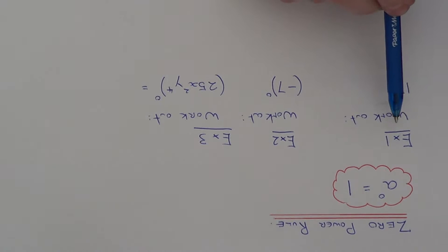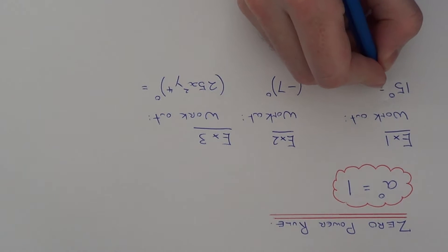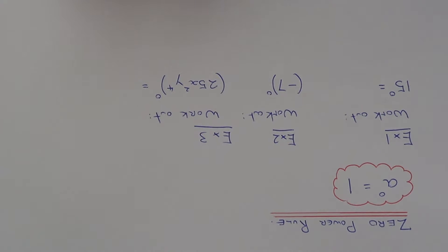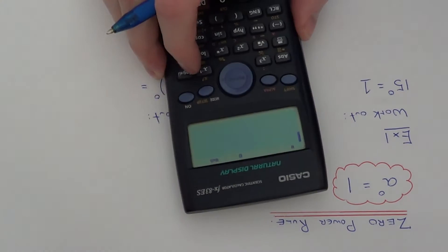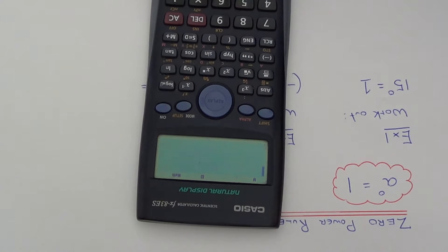So let's look at these three examples here. We've got to work out fifteen to the power of zero. Fifteen to the power of zero, zero power will always give an answer of one. You can check this on your calculator, so if you go fifteen to the power of zero, we should get the answer of one, there we go.